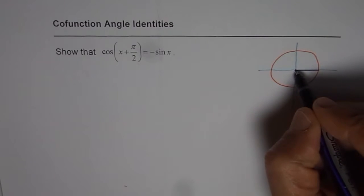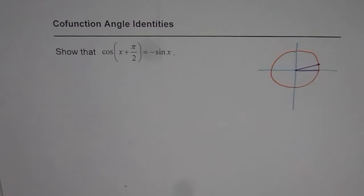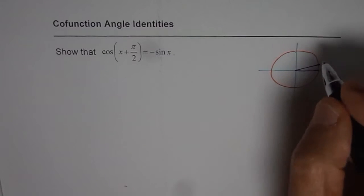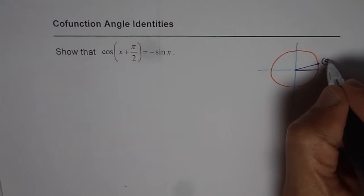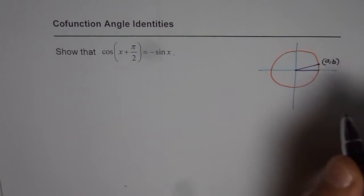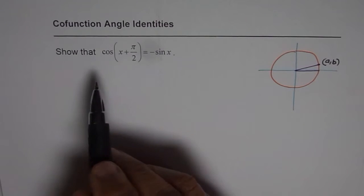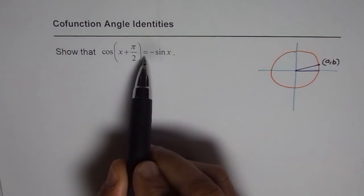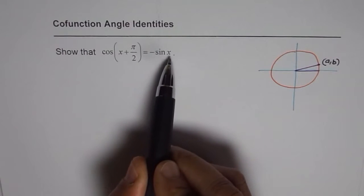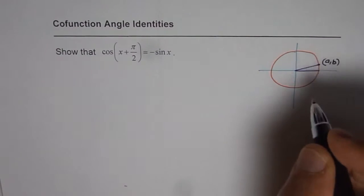Now let us consider a point on the unit circle and let the coordinates of the point be A, B, where A is the x value and B is the y value. Now in this particular question, we are saying that cos of x plus pi by 2 is equal to minus sin x. We need to really show it or prove it.